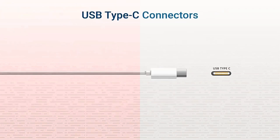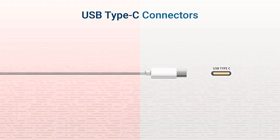USB Type-C is the latest standard connector and is designed to be smaller, thinner, and lighter for mobile devices. This connector finally solved the which-side-goes-up conundrum. Because of its symmetrical design, it can be inserted in a port either way, so you never have to turn it over and try again. The USB-C cable can also be reversible — that is, with the same connector on both ends, it can connect two devices that both have USB-C ports.